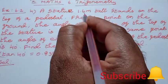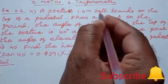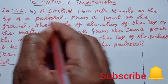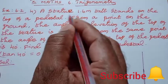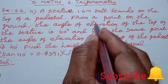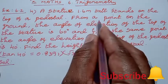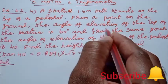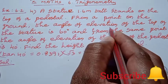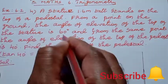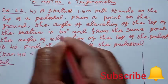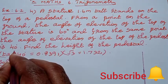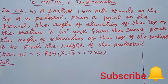There is a statue which is 1.6 meter in height. It stands on a pedestal. From a point on the ground, the angle of elevation to the top of the statue is 60 degrees and the angle of elevation to the top of the pedestal is 40 degrees. We need to find the height of the pedestal.